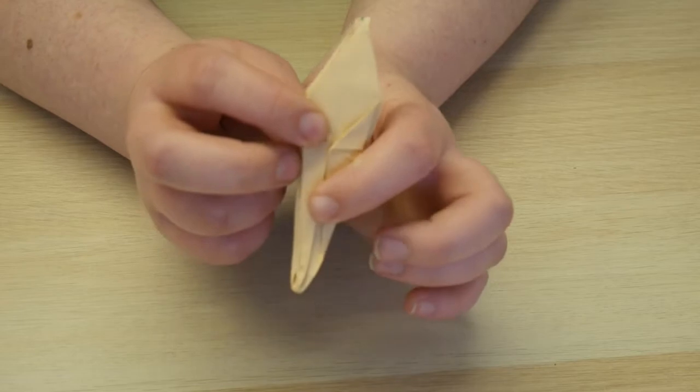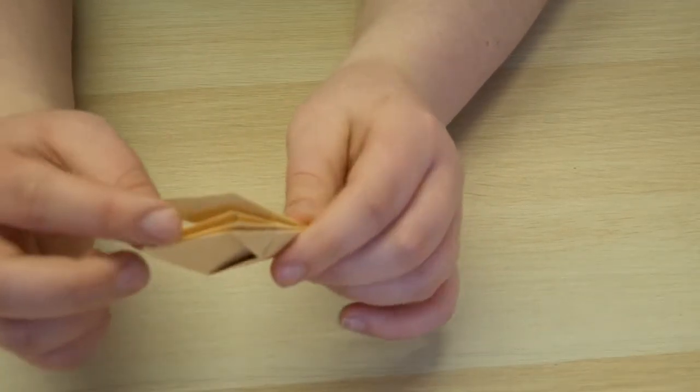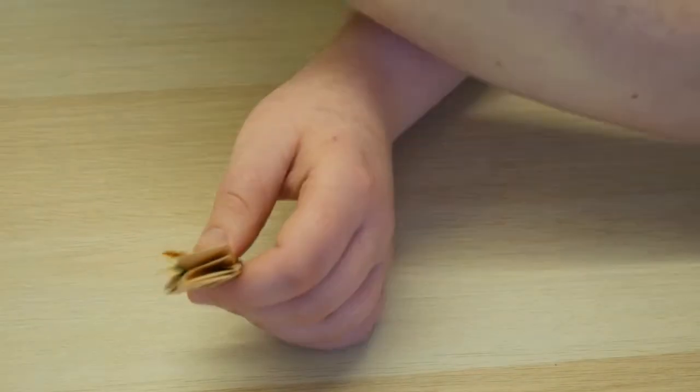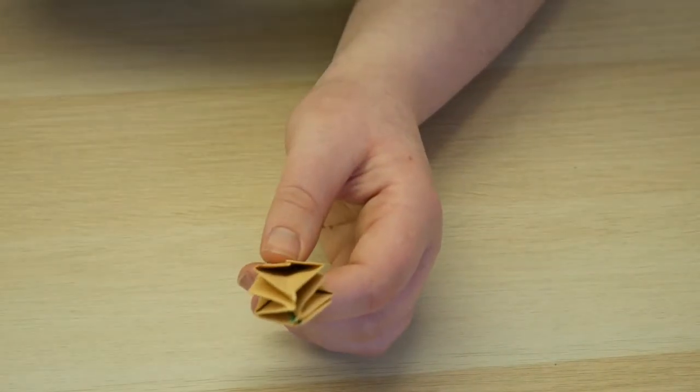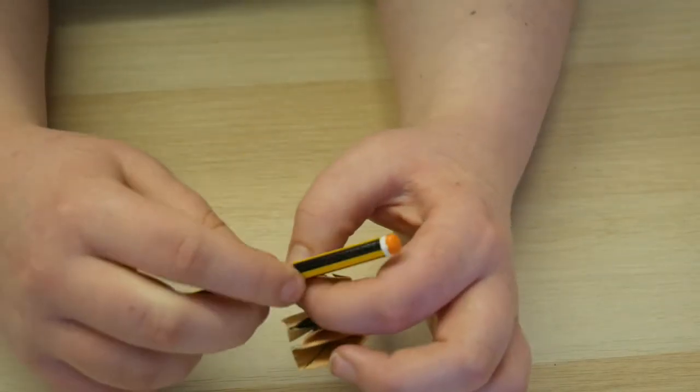Okay, so we have these little sort of tabs at the top and we're very close to this becoming our flower now. So we're going to take a pencil or a pen or a straw, whatever you've got that you can use to just roll these up.